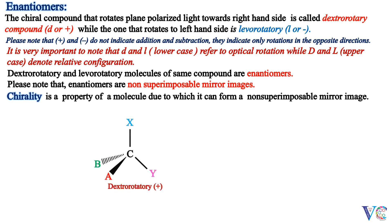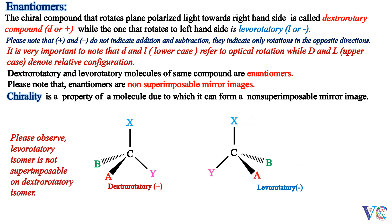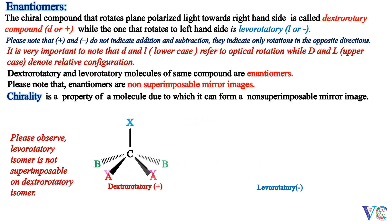Dextrorotatory isomer and levorotatory isomer — please observe that the levorotatory isomer is not superimposable on the dextrorotatory isomer. So these two molecules are enantiomers.